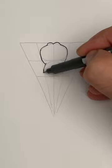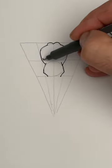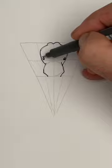Now follow the next guideline down. It's almost like an L shape. Draw two small eyes on the side of the head. They're just little ovals.